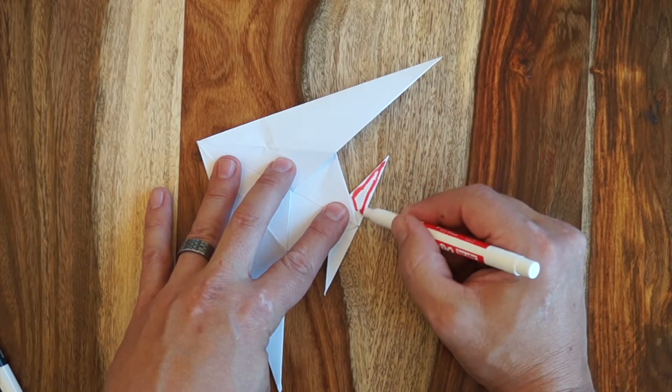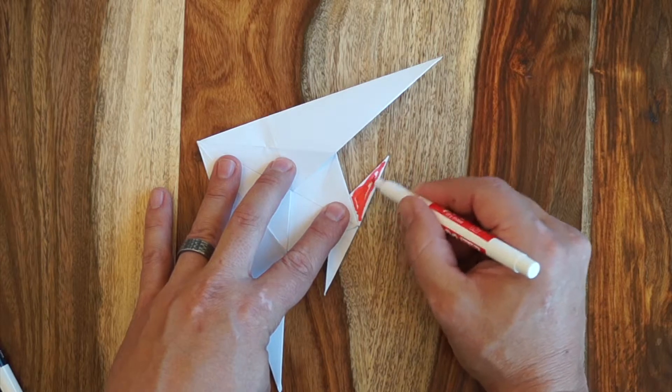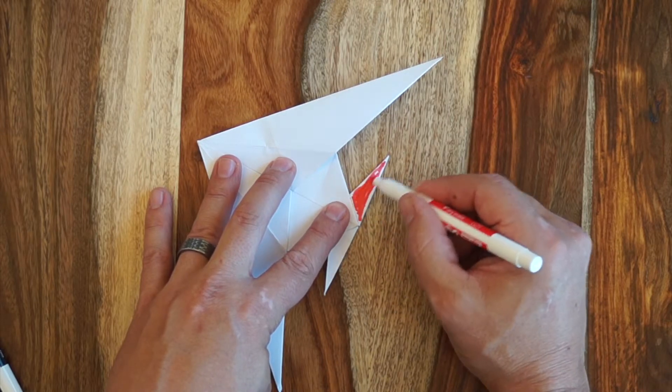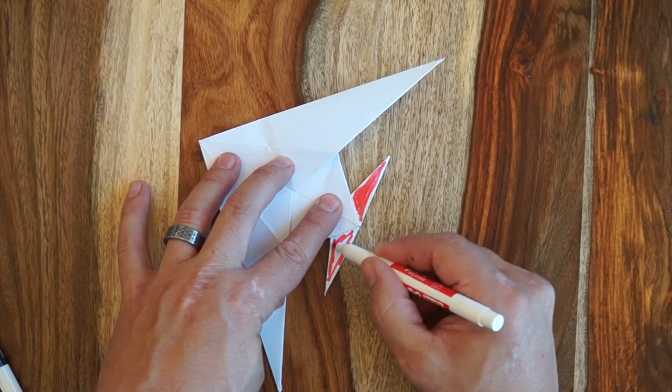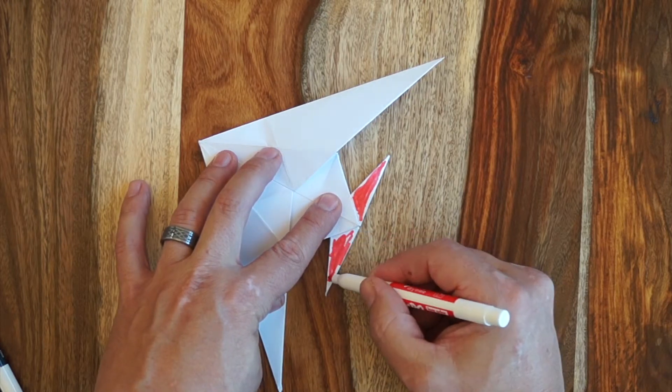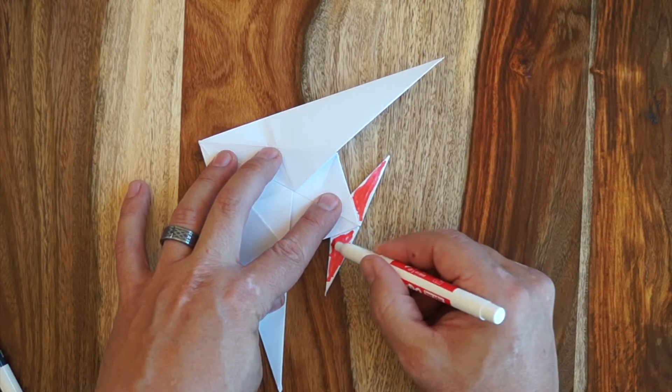Now this isn't going to be perfect because I don't want to get ink all over the table that I'm on and everything, but I'm just going to color these in and try not to get the ink on the rest of the fish.